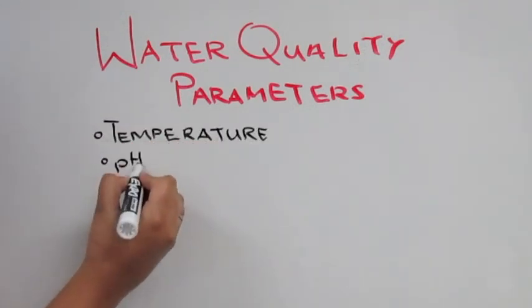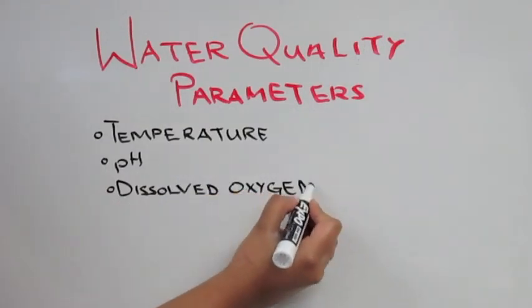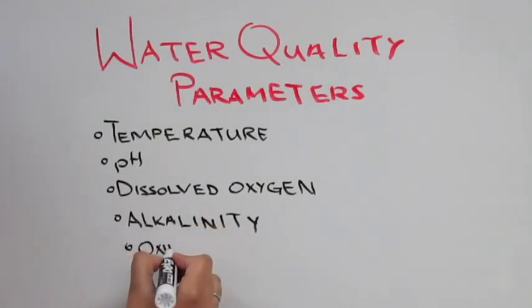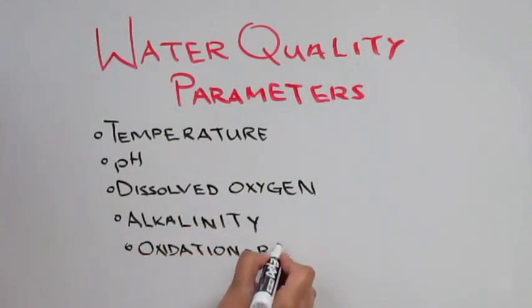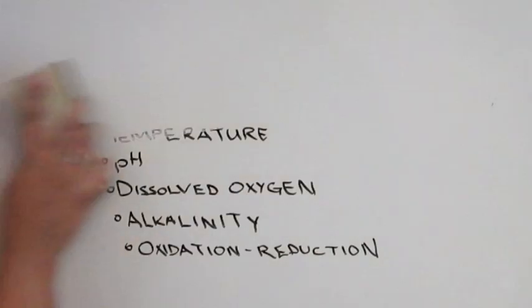pH, a function of ion activity of H+; dissolved oxygen concentration that is plant and microbial based; alkalinity, which is measured by its ability to neutralize acidity; and the oxidation reduction potential, the tendency to gain or lose an electron.